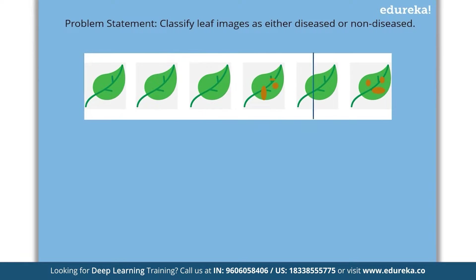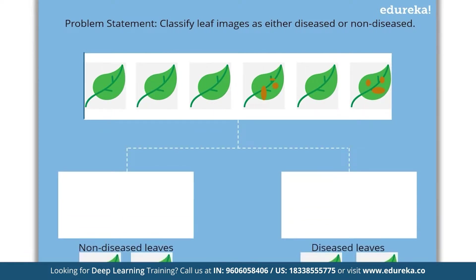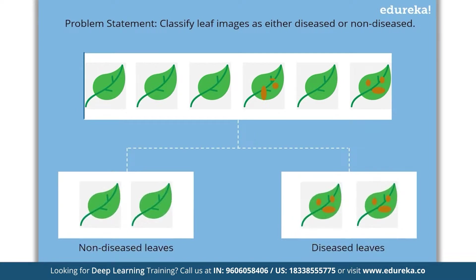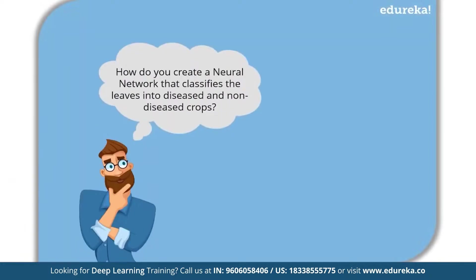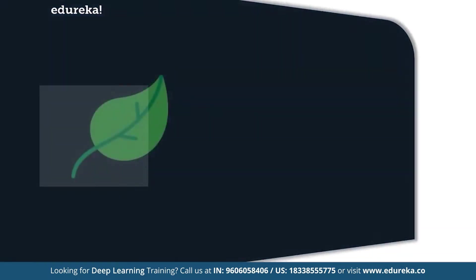Consider a scenario where you have been given a set of labeled images and you have to classify them into two classes — one class containing images of non-diseased leaves and the other class containing images of diseased leaves. So how would you create a neural network that classifies the leaves into diseased and non-diseased crops? The process always begins with processing and transforming the input in such a way that it can be easily processed. Each leaf image will be broken down into pixels depending on the dimension of the image.